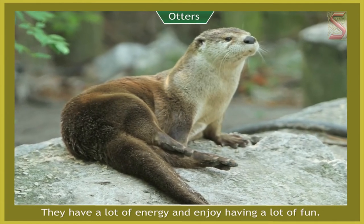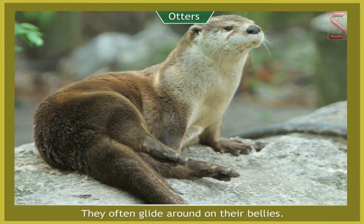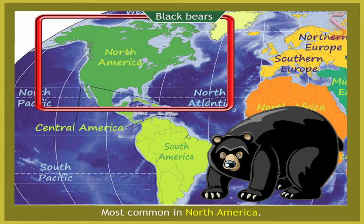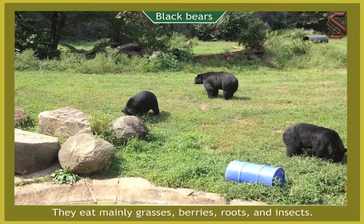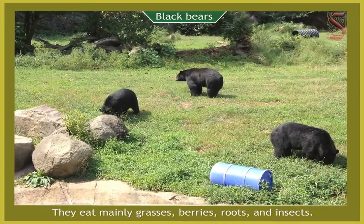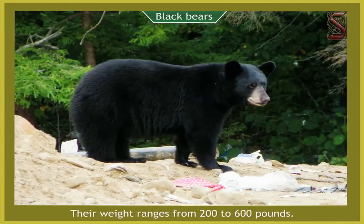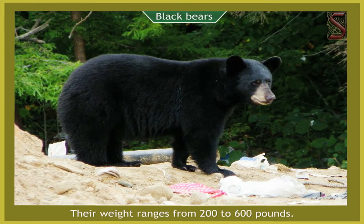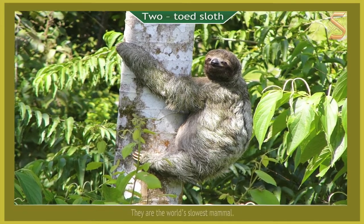Otters often glide around on their bellies. Black bears are most common in North America. They eat mainly grasses, berries, roots, and insects. Their weight ranges from 200 to 600 pounds.